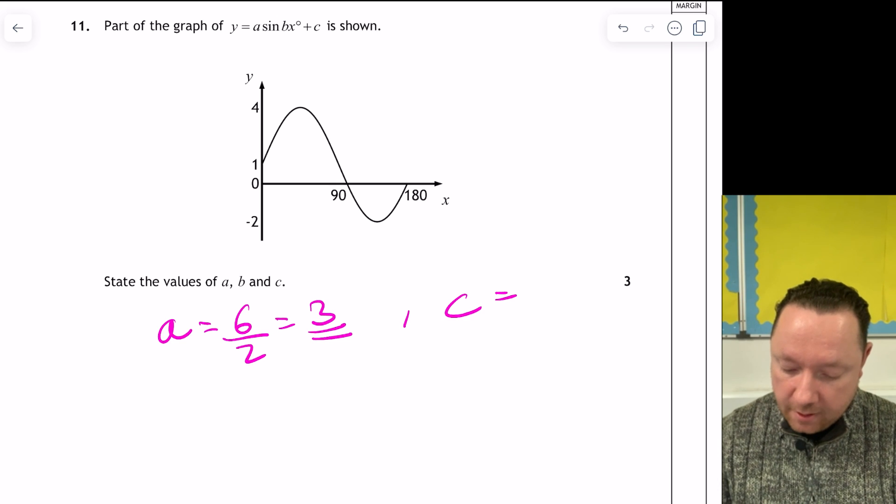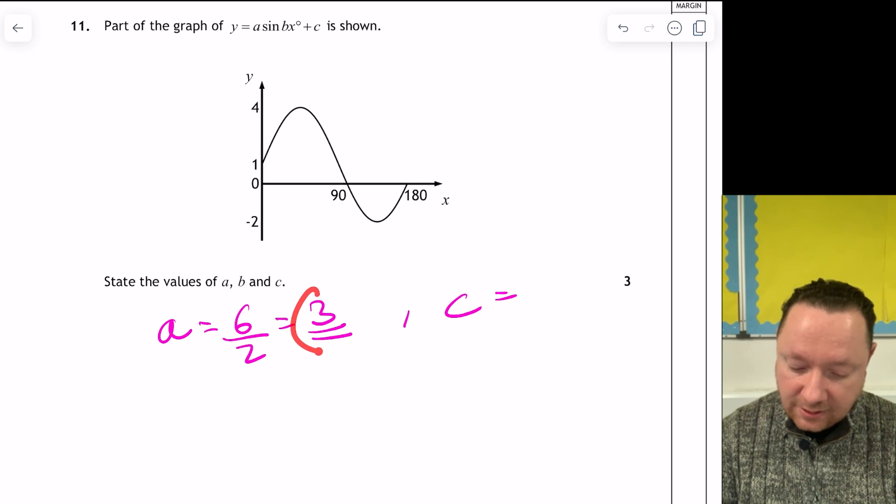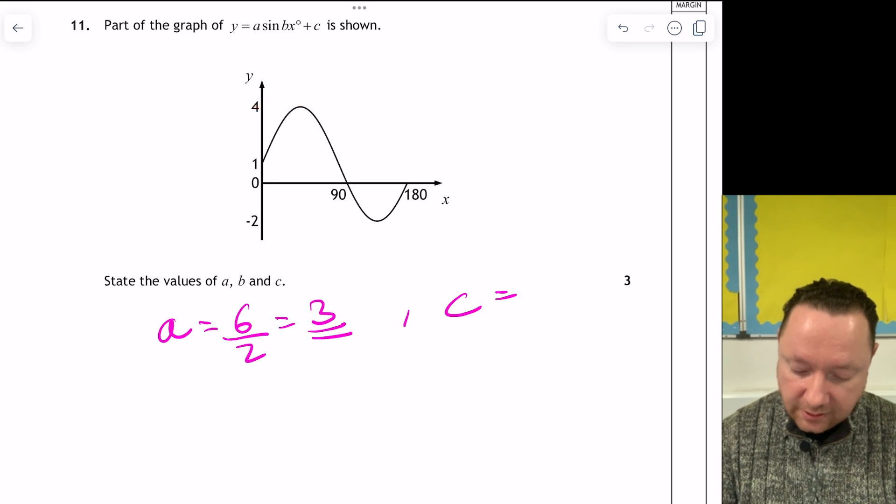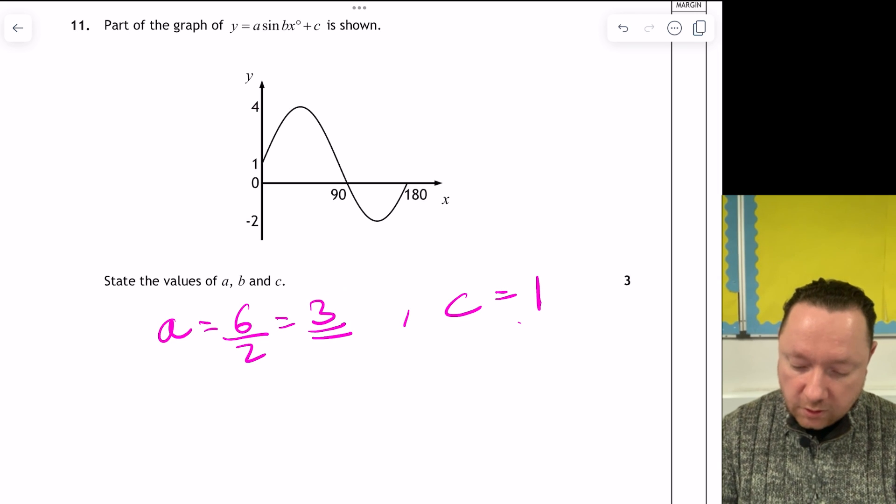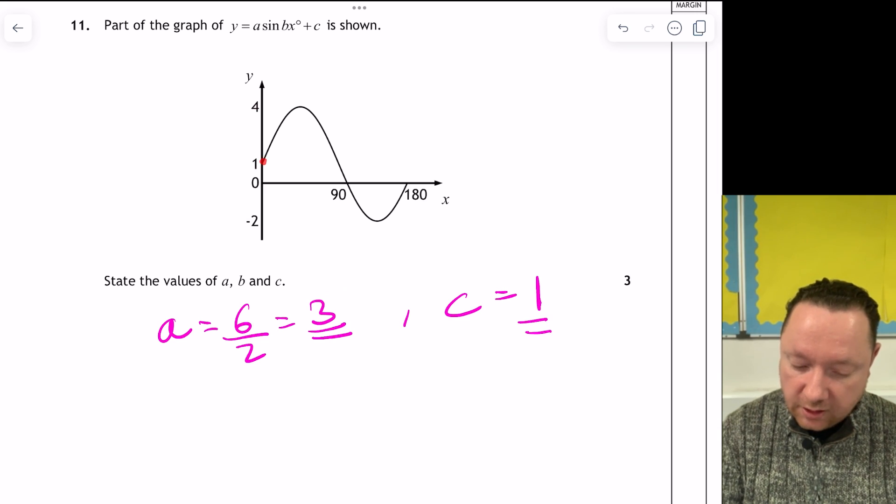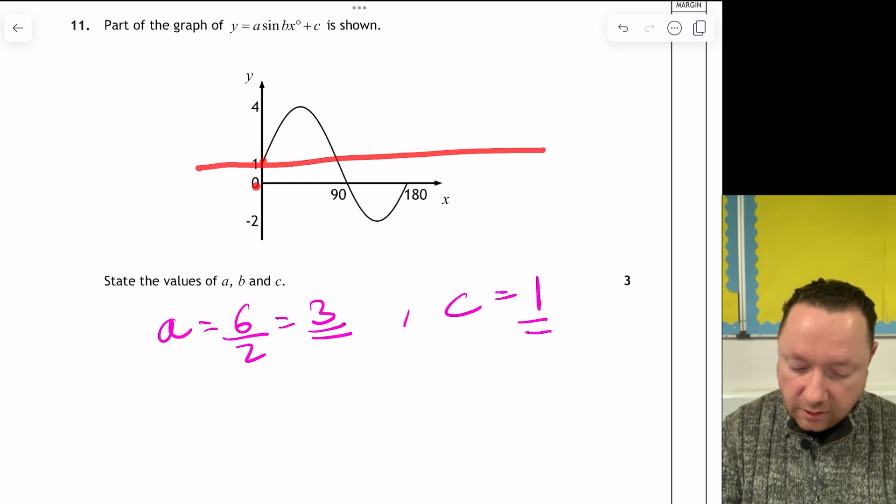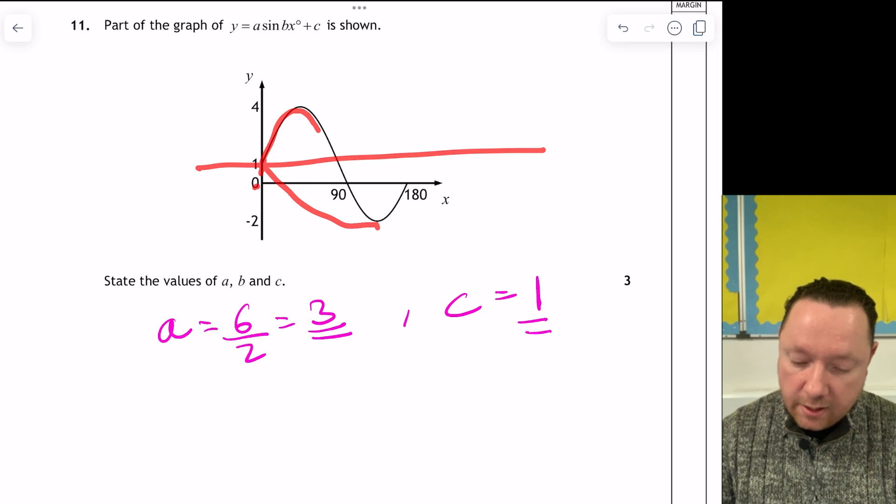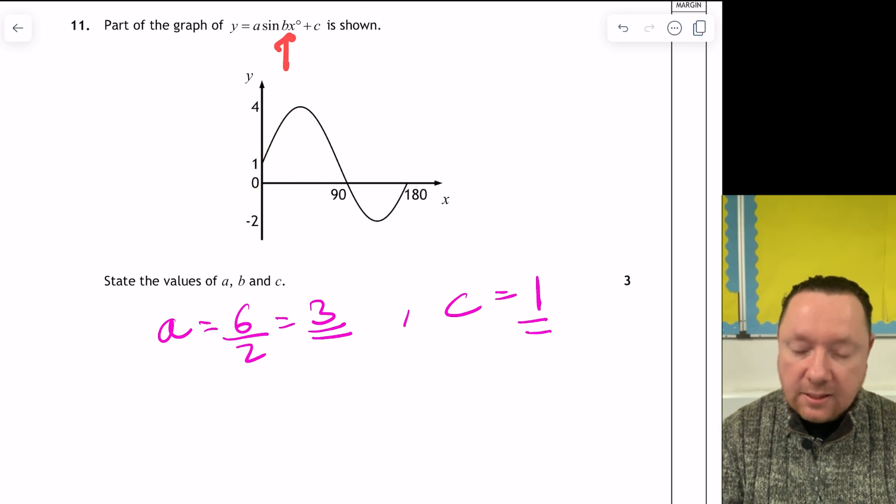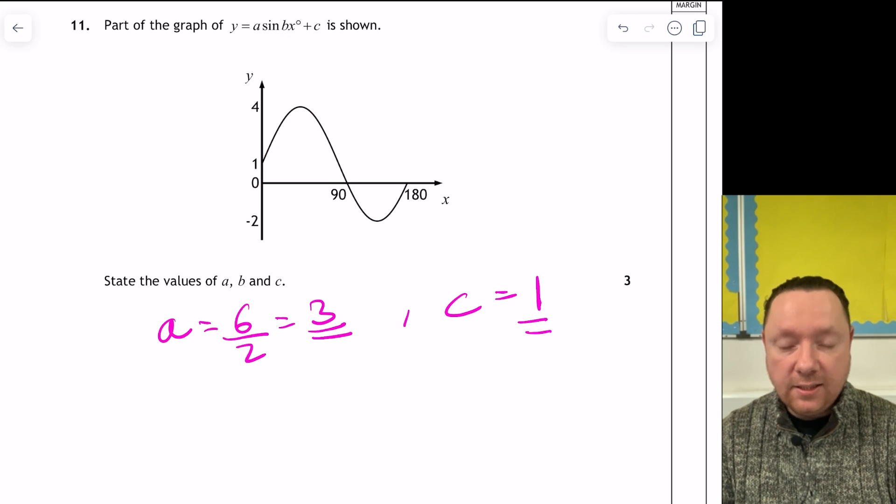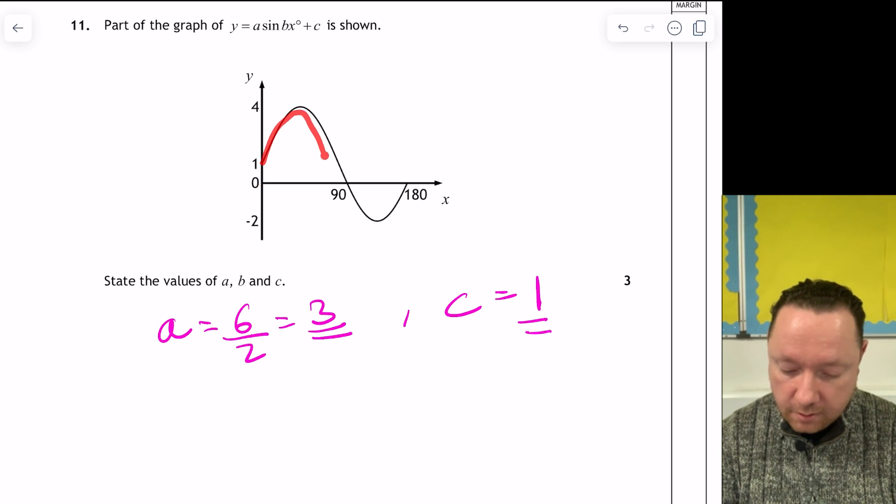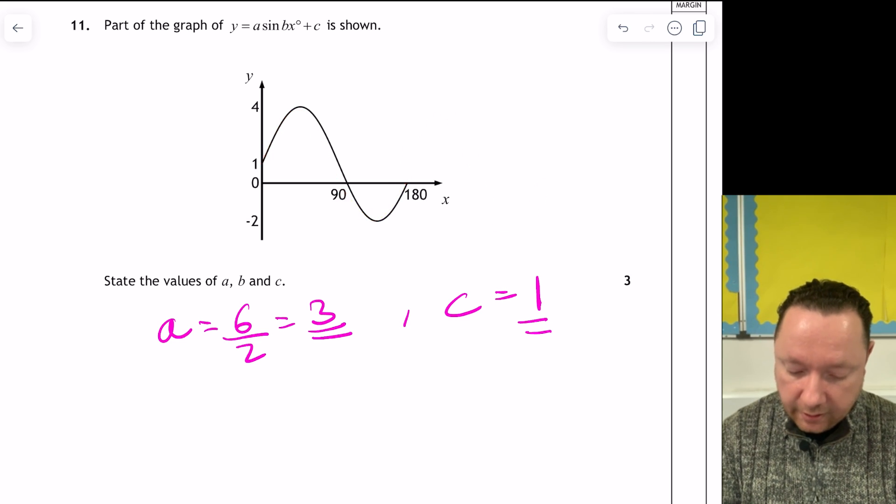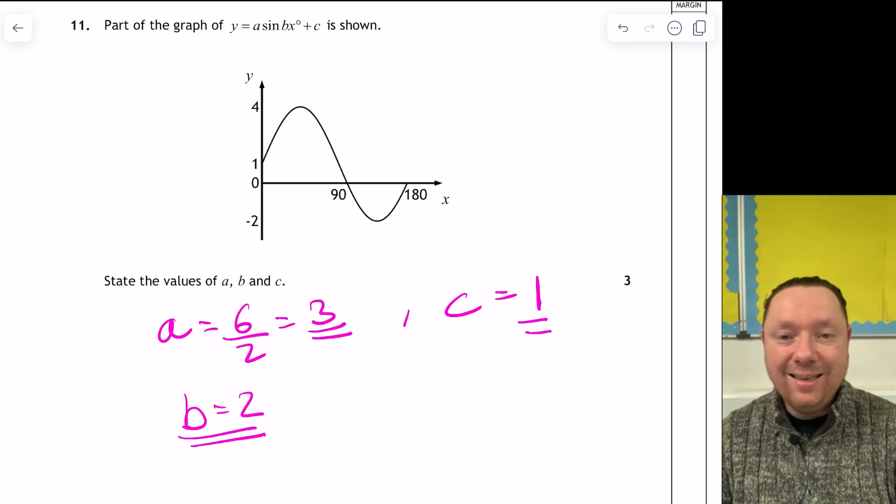Now I can get c straight away. I'll deal with b in a minute. Because this plus this must equal the highest point, 4. So straight away c is 1. 3 plus 1 is 4. So that means really it's starting at 1 instead of starting at 0. 1 plus 3 is 4. 1 minus 3 is minus 2. Now to get b, bx is how many of these graphs appear up to 360. So I've got 1. But only up to 180. And then I'll have another one, 2. So b equals 2.